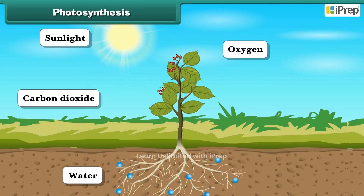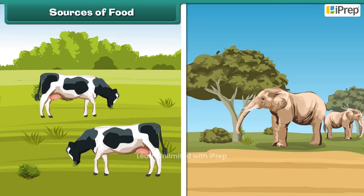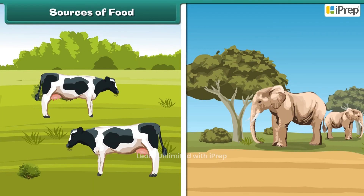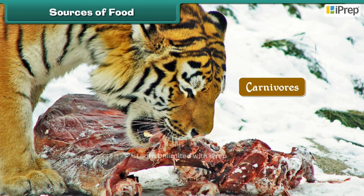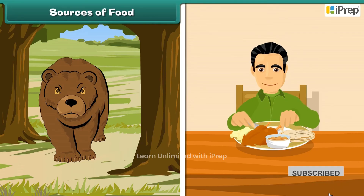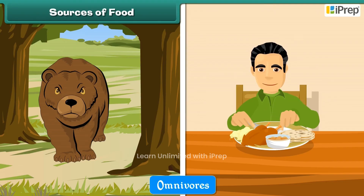Oxygen is released during photosynthesis. Some animals get their food only from plants — they are called herbivores. Cows and elephants are examples of herbivores. Some animals kill and eat other animals for survival — they are called carnivores. Tigers are examples of carnivores. Some animals get their food from both plants and animals — they are called omnivores. Bears and humans are examples of omnivores.